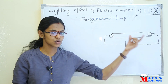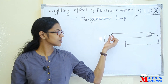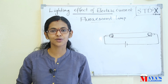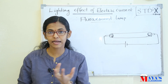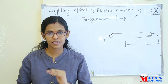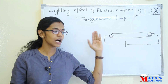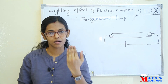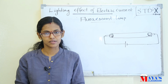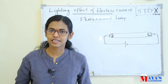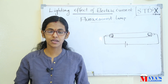In the fluorescent lamp, there is a glass tube with mercury atoms. The mercury atoms produce UV light, which is absorbed by the fluorescent material and converted into visible light. The main advantage of the fluorescent lamp is that it does not release as much heat as an incandescent lamp, making it more efficient.